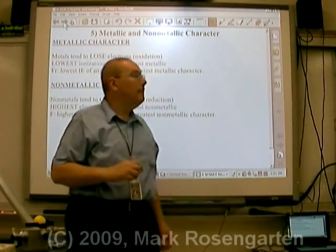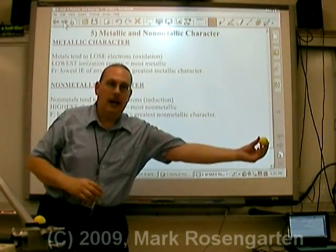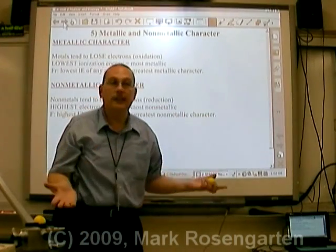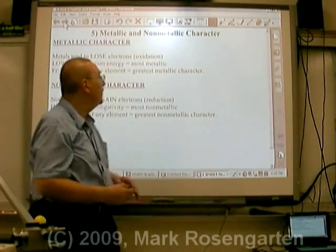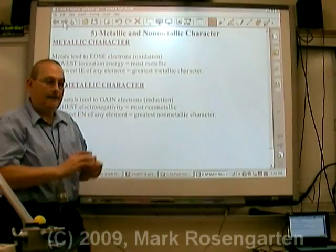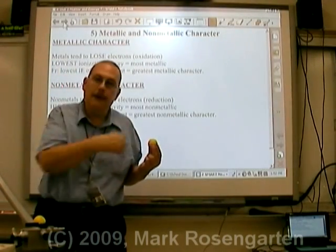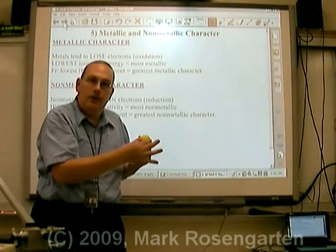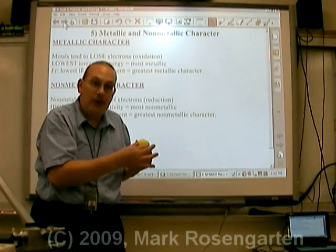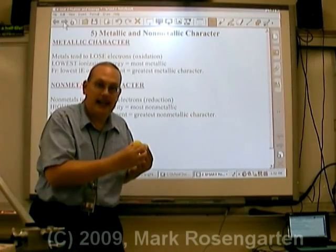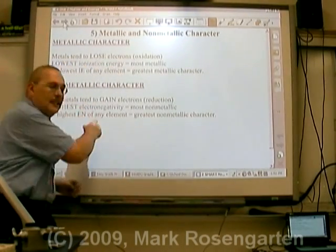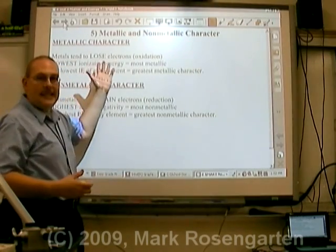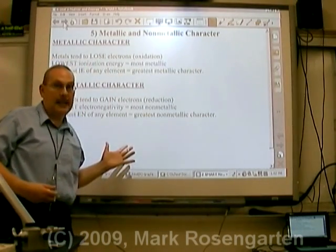To sum up: metals have very large radii and tend to lose electrons because it takes very little energy for them to do so. Non-metals have very small radii; they are very attracted not only to their own electrons but to the electrons of any other element that might want to bond with them — high electronegativity — so non-metals tend to gain electrons. Those are the properties of metallic character and non-metallic character.